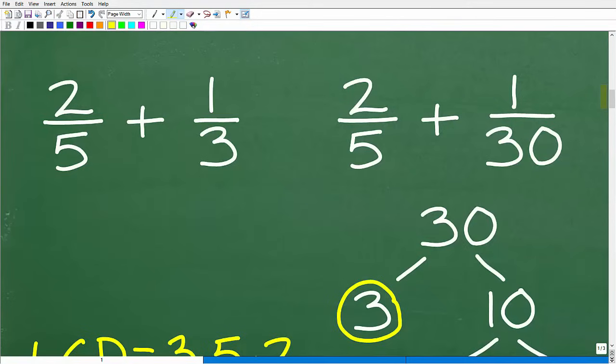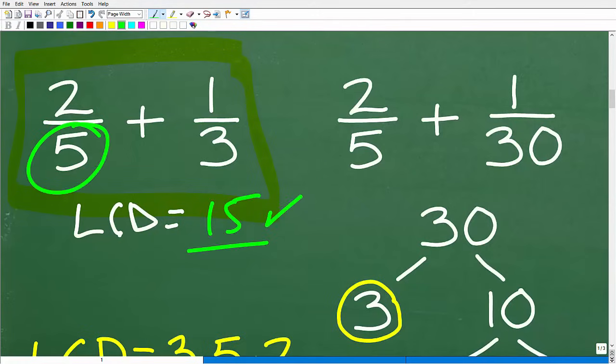So most of you out there probably already know that, yes, I'm going to have to find the LCD. So let's take a look at this simple example: 2 fifths plus 1 third. What is the LCD right here? Well, most of you might be saying, hey, Mr. YouTube Math Man, it's 15. And you would be correct, right? So 15 is the lowest number that both 5 and 3 can divide into. So how did you find that? Well, how did you actually calculate the LCD? Now, when you ask someone that, they kind of wonder, well, I don't know. I just know that the LCD is 15.